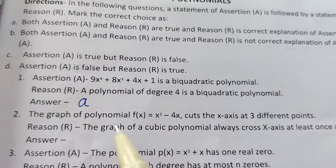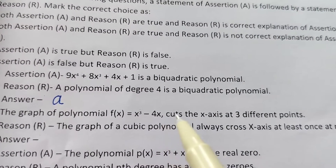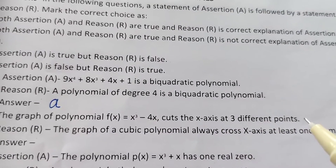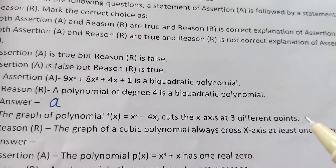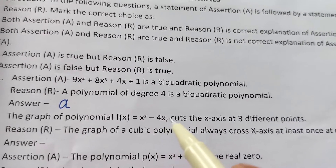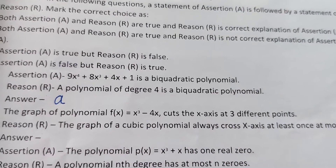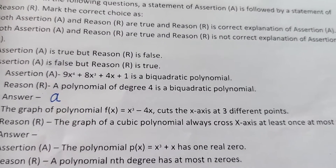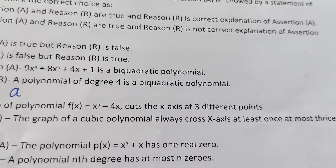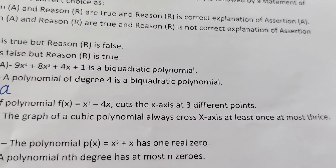Question 2: The graph of polynomial F(x) = x³ - 4x cuts the x-axis at 3 points. Since x³ is a cubic polynomial, the reason is that the graph of a cubic polynomial always crosses the x-axis at least once and at most thrice.